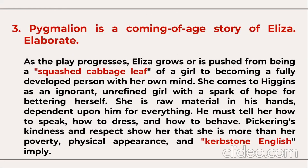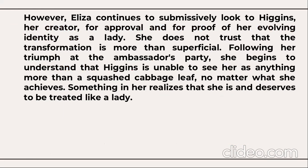Question number three: Pygmalion is a coming-of-age story of Eliza. As the play progresses, Eliza grows from being a 'squashed cabbage leaf' of a girl to becoming a fully developed person with her own mind. She comes to Higgins as an ignorant, unrefined girl with a spark of hope for bettering herself. She is raw material in his hands — dependent upon him for everything; he must tell her how to speak, how to dress, and how to behave. However, Eliza continues to submissively look to Higgins for approval and proof of her evolving identity as a lady.